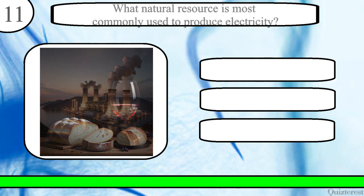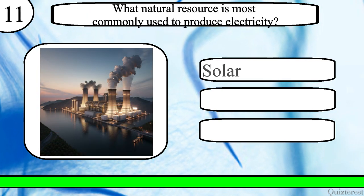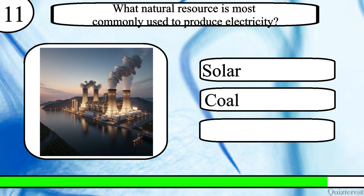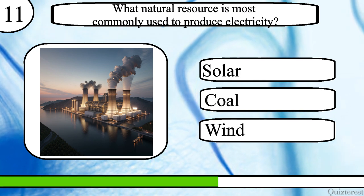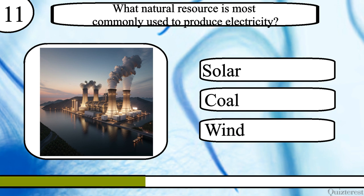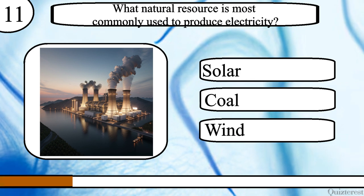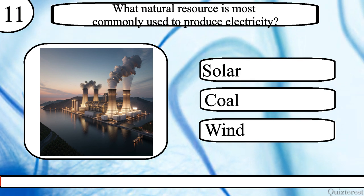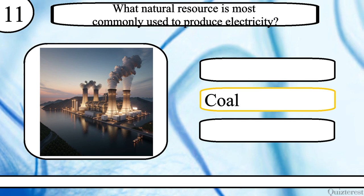Question 11. What natural resource is most commonly used to produce electricity? Solar, coal or wind? The correct answer is coal.